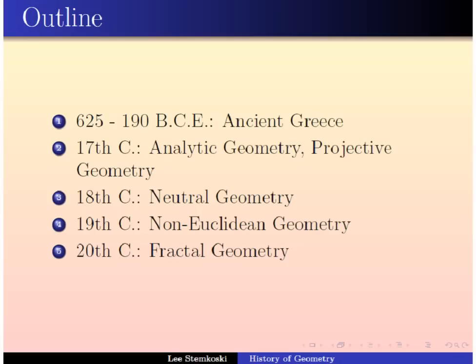First, any history of geometry must begin with a survey of the geometers and mathematicians who lived in ancient Greece. From there, we'll fast forward into the 17th century, where we'll discuss the foundations of analytic geometry and projective geometry. Following that, we'll discuss developments in the 18th century, where people explored the geometry of Euclid in depth and developed something called neutral geometry. Afterwards, the establishment of truly non-Euclidean geometries, specifically hyperbolic geometry and spherical geometry, around the 19th century. And finally, we'll end with a survey of some very recent developments in geometry called fractal geometry.